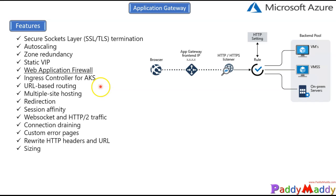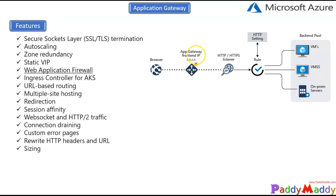Now let's understand the Application Gateway features. Since Application Gateway is a web traffic load balancer that enables you to manage traffic to web applications, it has different components — including a front-end IP which will be a static IP, listeners, and routing-specific settings. Let's go through the list of features supported by Application Gateway.